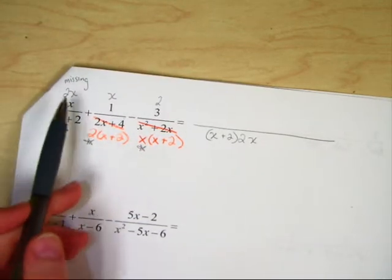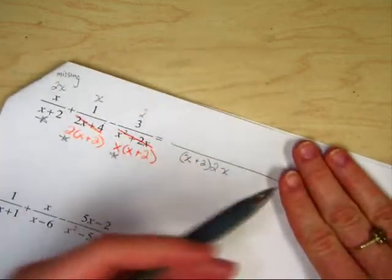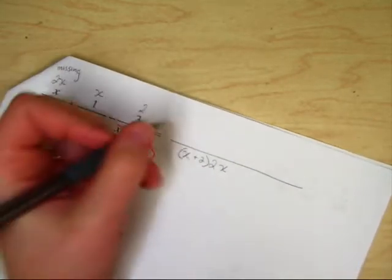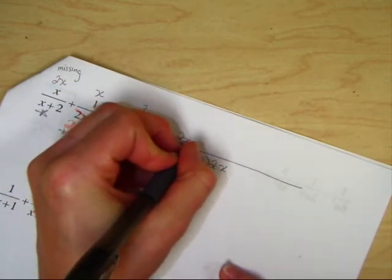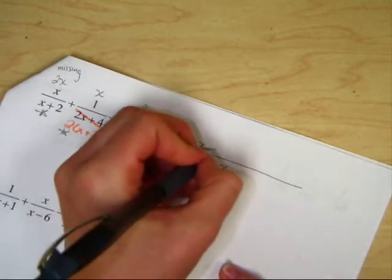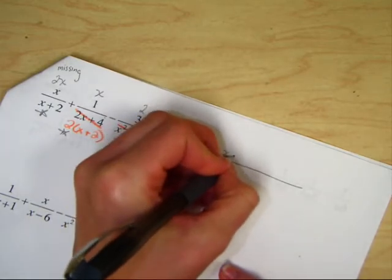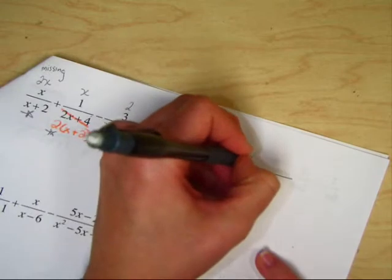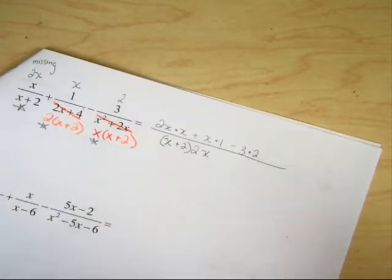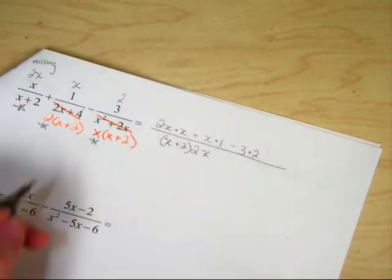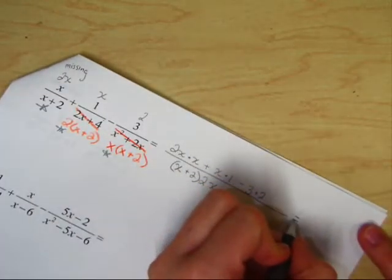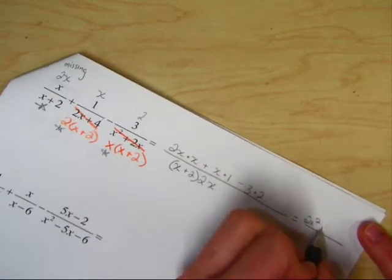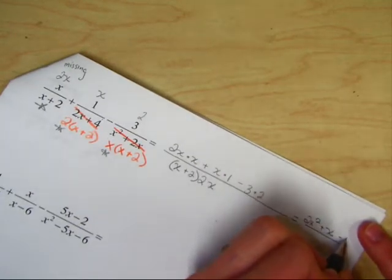Now what we're going to do is we're going to put all of those things together. And you can do this quicker than I am, but I will take as many steps as needs be. So this is 2x times x plus x times 1 minus 3 times 2. Now we'll multiply and add. That is going to equal 2x squared plus 1x minus 6.